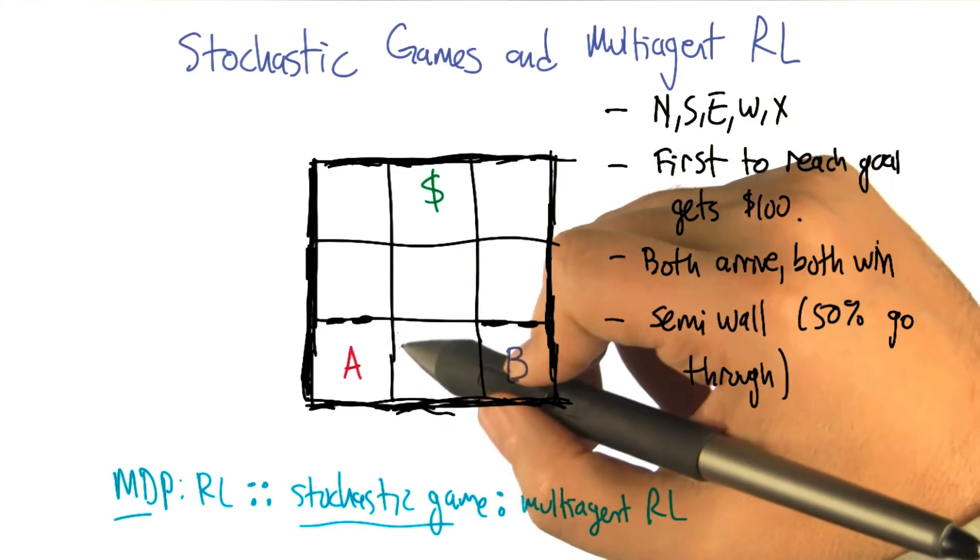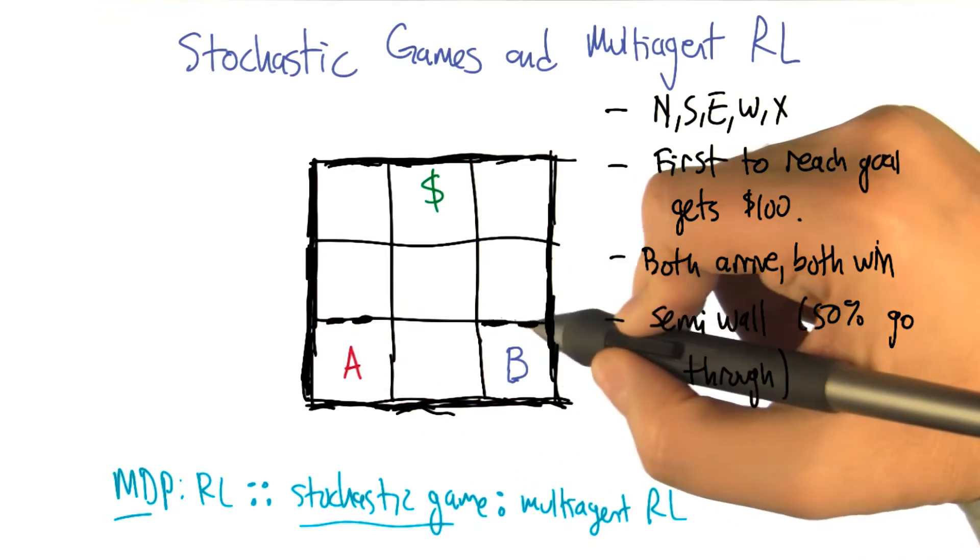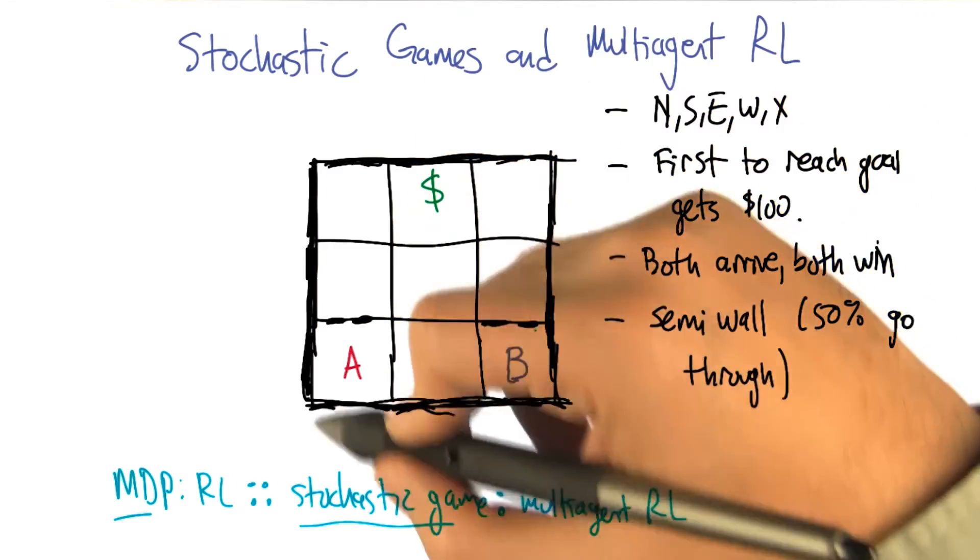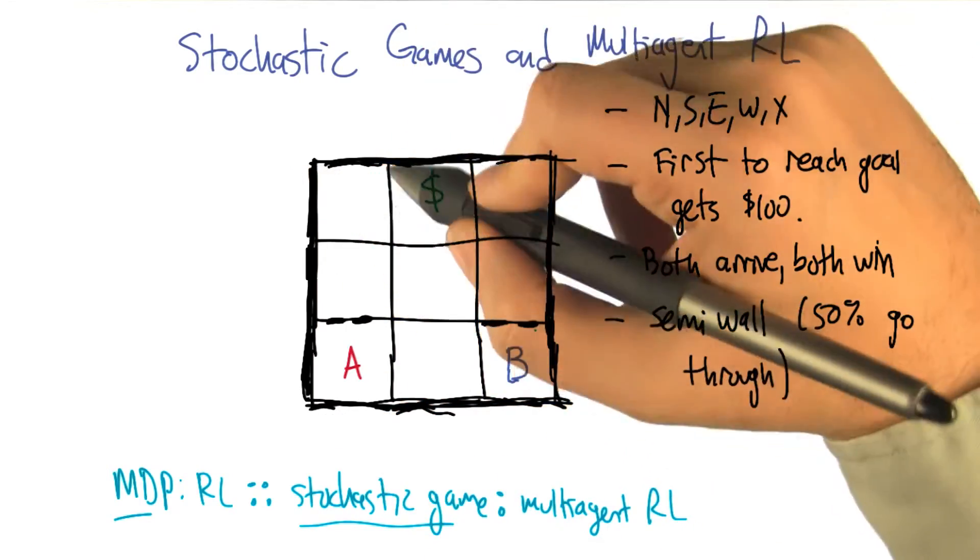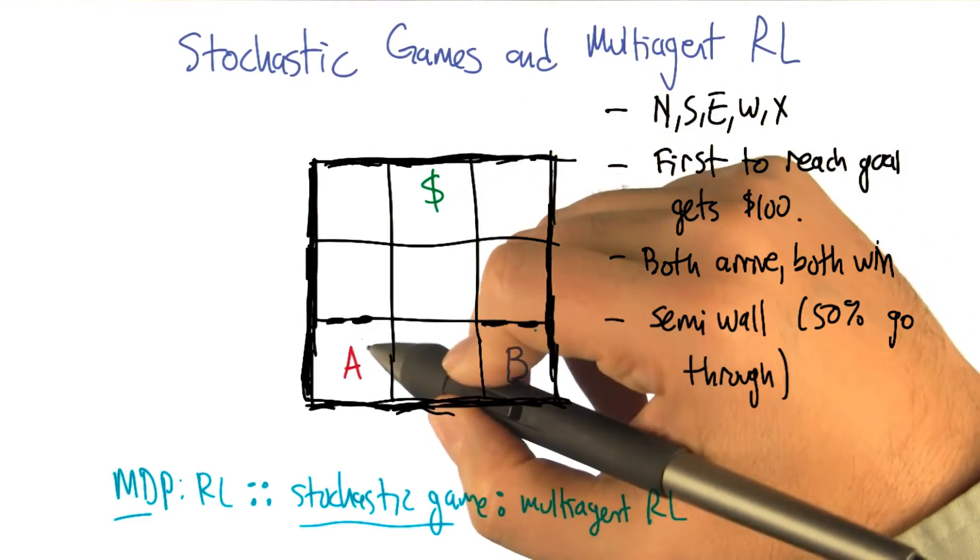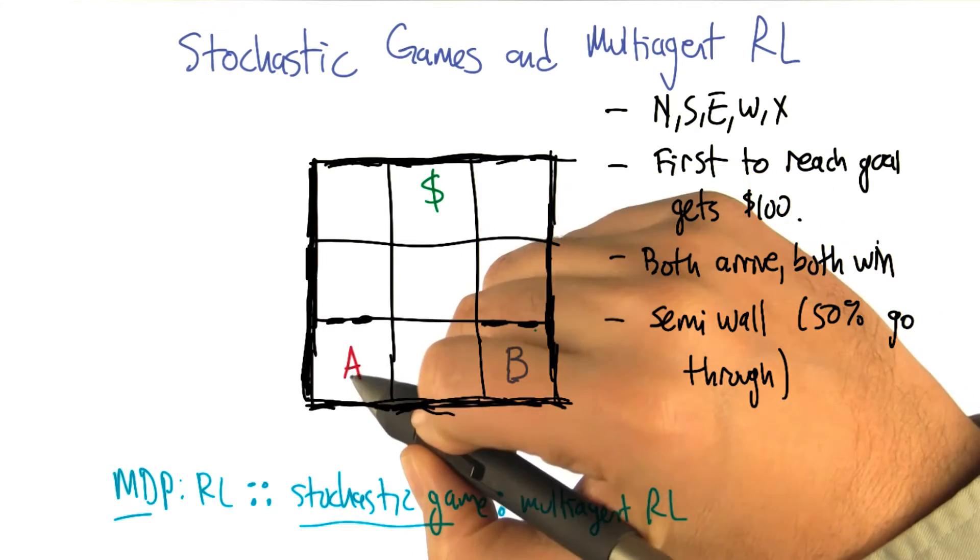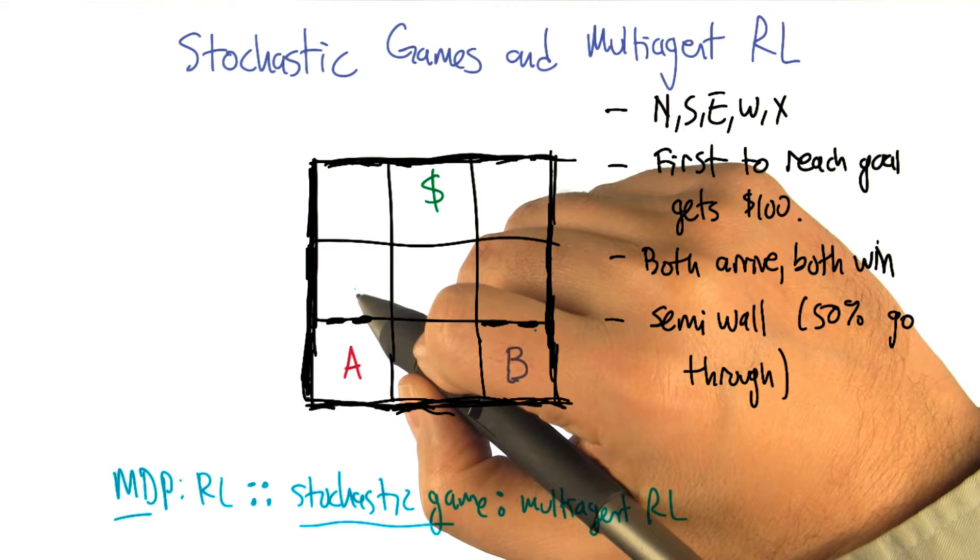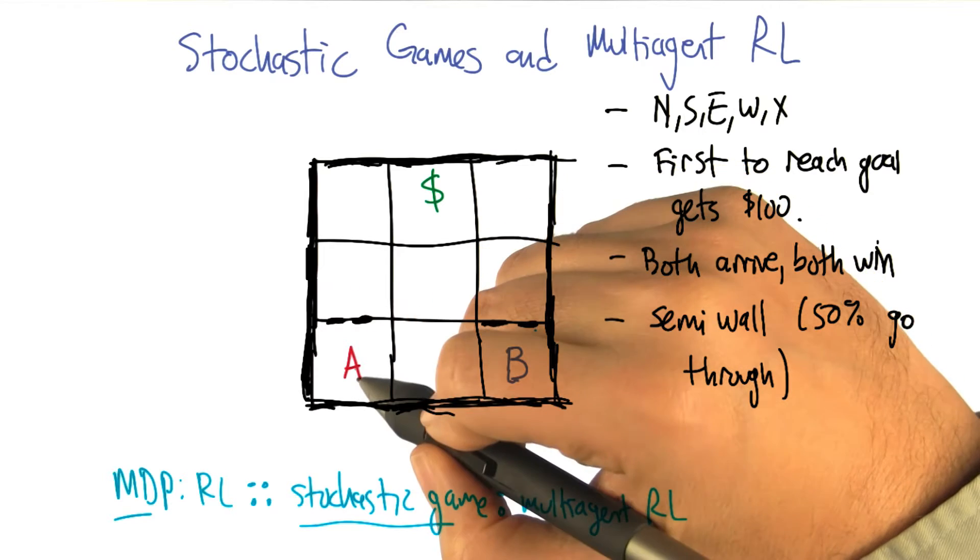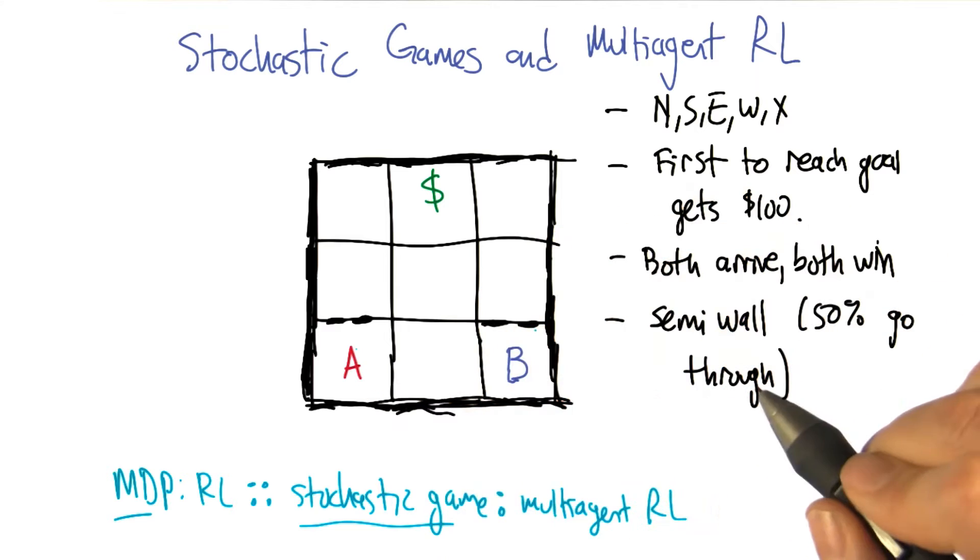The transitions are deterministic except for through these walls here which are called semi walls. So these thick lines represent walls that you can't go through. The thin lines just represent cell boundaries. But this kind of dashed line here is a semi wall, and that means if you try to go through that, say by going north from, if A goes north from this position, then 50% probability A will actually go to the next state, and 50% probability A will stay where A is.